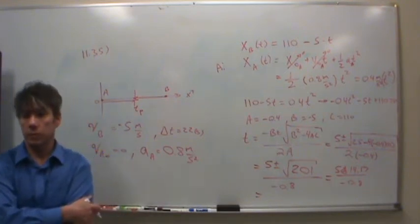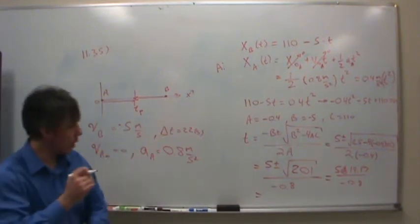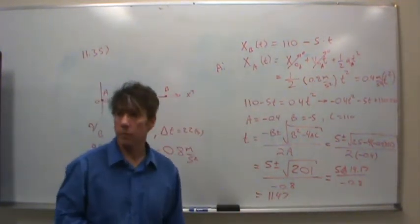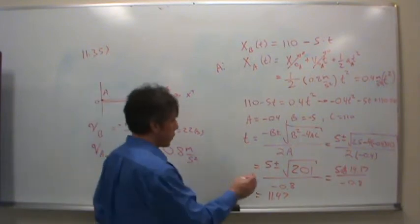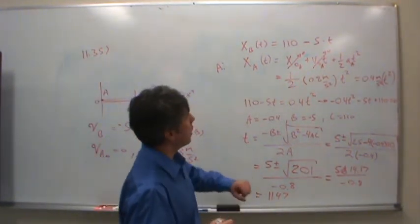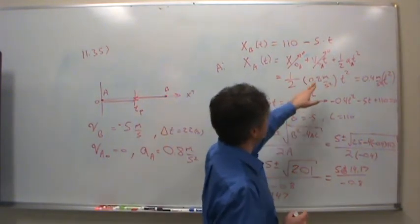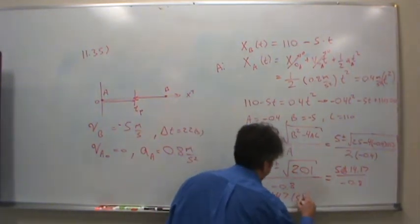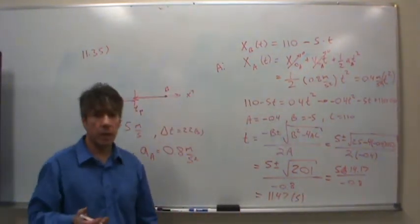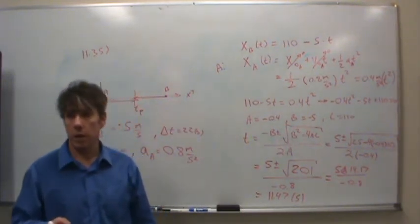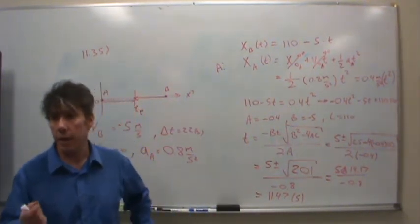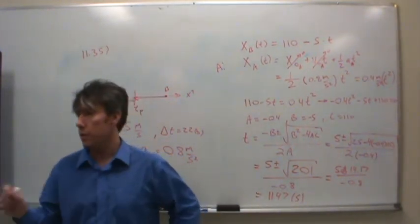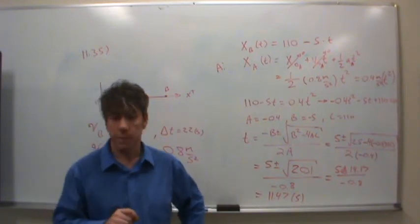Please plug this into your calculator: 5 less 14.17 divided by negative 0.8. I got 11.47. 11.47 seconds. So this should be 11.47 seconds. Looks like we've been consistent with all of our units. That's how long it takes for the vehicles to meet each other and cross. Now that makes sense because it takes 22 seconds for the bus to go 110 meters from its initial position to the origin. So this makes sense.